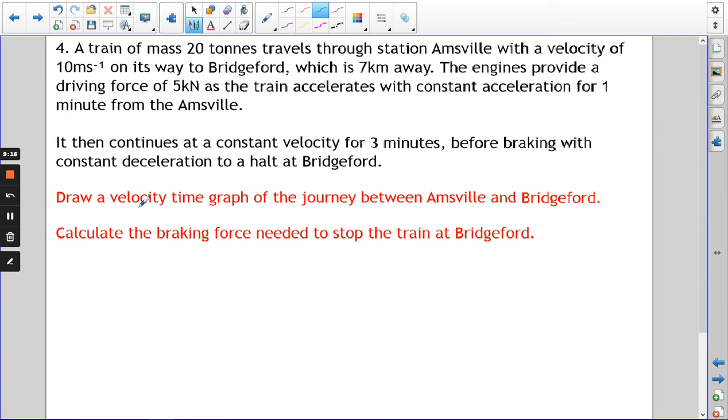Here's my question. Probably best you pause the video, write it all down, possibly have a go and see how you get on before I do it. We've got a train of mass 20 tons, so m is 20,000 kilograms, traveling through a station Amsville with a velocity of 10 meters per second on its way to Bridgeford which is 7 kilometers away. The engines provide a driving force of 5 kilonewtons, so initially F is 5000 newtons, and they do that for one minute to increase the velocity of the train. Then it travels at a constant velocity for three minutes before braking and coming to a halt at Bridgeford.